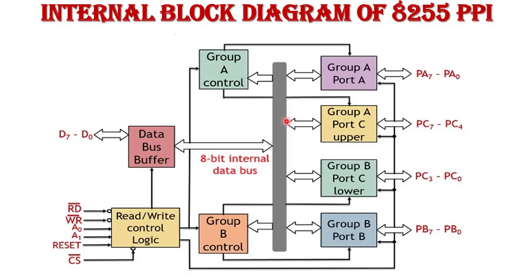Again, looking at the block diagram — the single lines connecting group control, ports, read/write logic, and data bus buffer represent control signals given to all the blocks, while the double lines represent the 8-bit bidirectional internal data bus. This is the block diagram of 8255 Programmable Peripheral Interface.